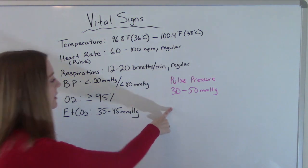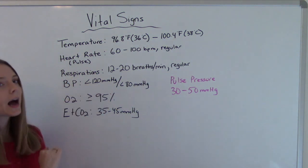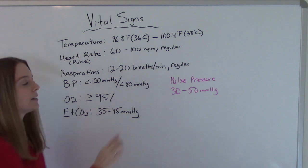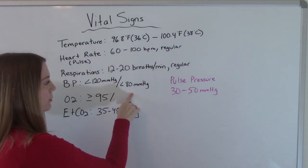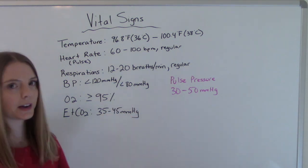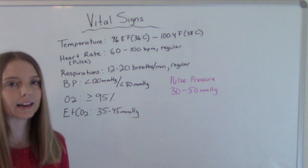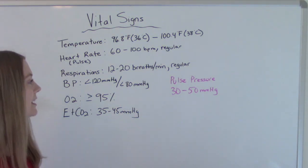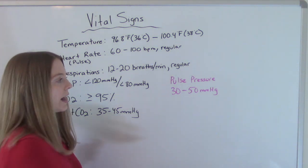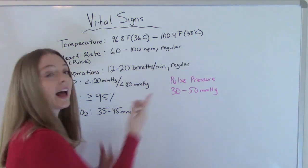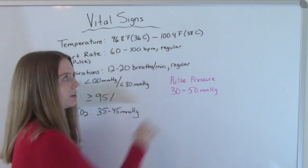So your pulse pressure is your systolic, so your top number, minus your diastolic, which is your bottom number. So let's say, for example, our patient is 120 over 80. So 120 minus 80 is 40. So they would have a pulse pressure of 40. And that's okay. That's normal, right? That's in a good range.